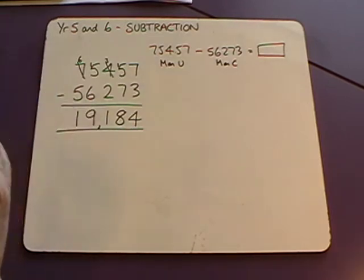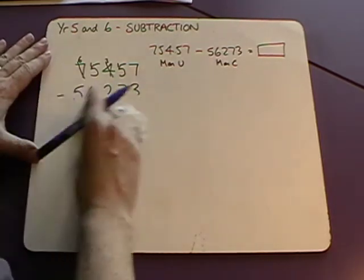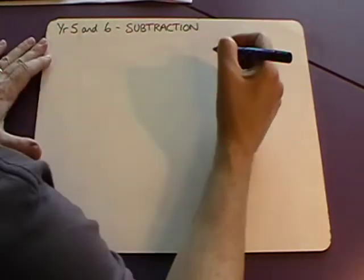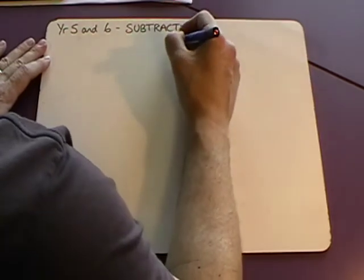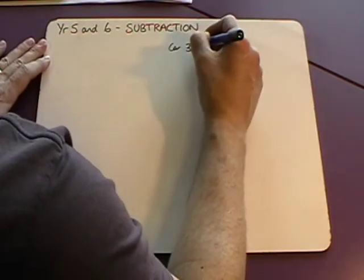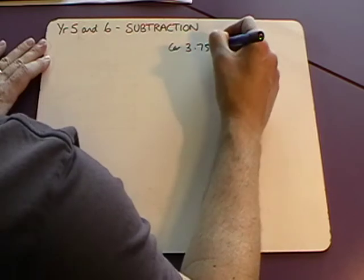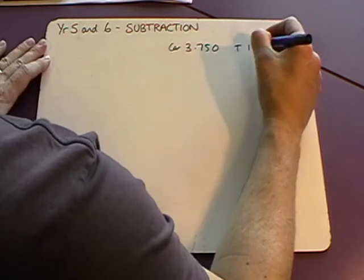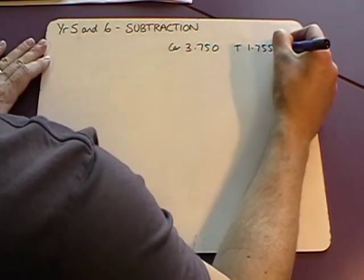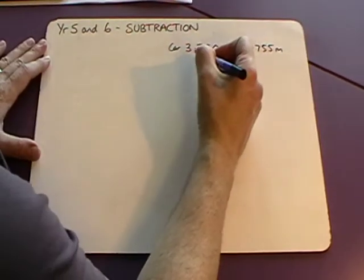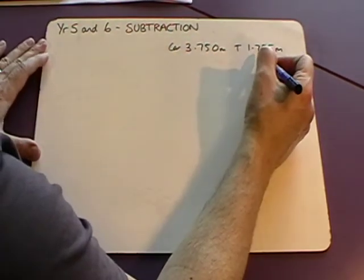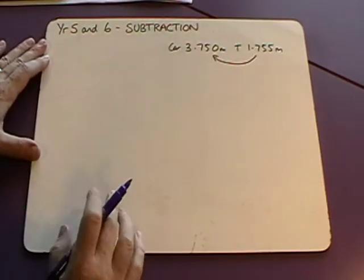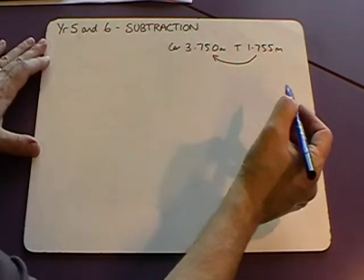Next we need to be able to do decimal subtraction to three decimal places. So if we have a context. If my car is three point seven five meters long and my trailer is one point seven five five meters long, how much longer is my car than my trailer? So if we subtract the trailer from the car, that will give us the difference and show us how much bigger the car is than the trailer.